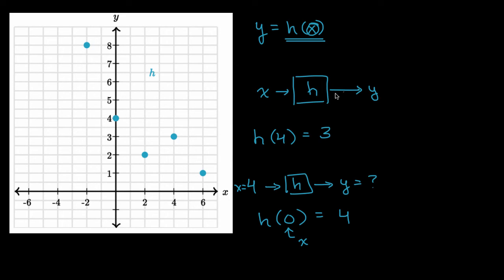Given the input, what is going to be the output? And that's what these points represent. Each of these points represent a different output for a given input.